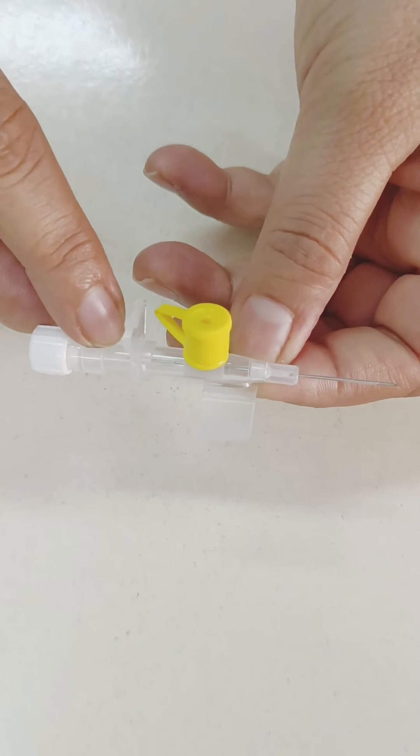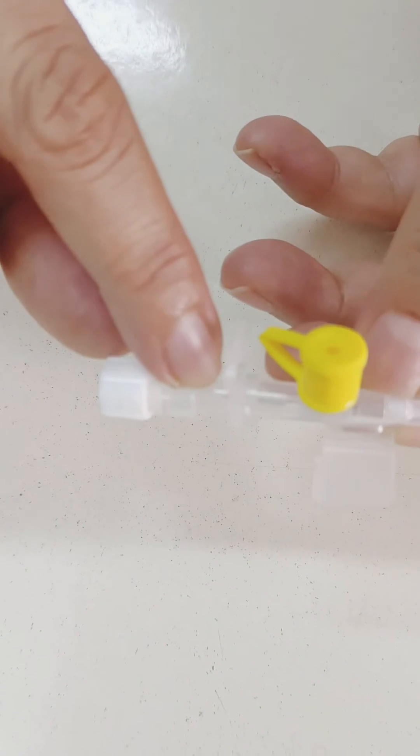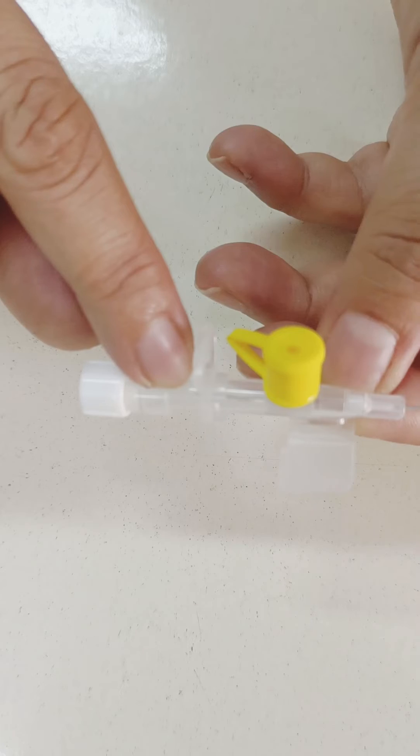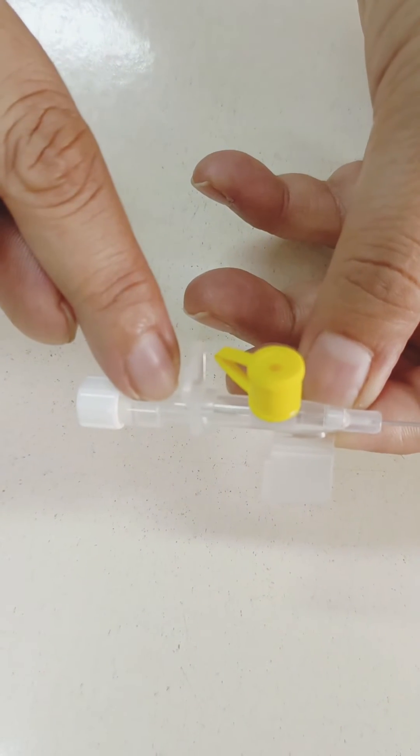This is flashback chamber. When intracath is inserted inside the vein, blood comes in this chamber.